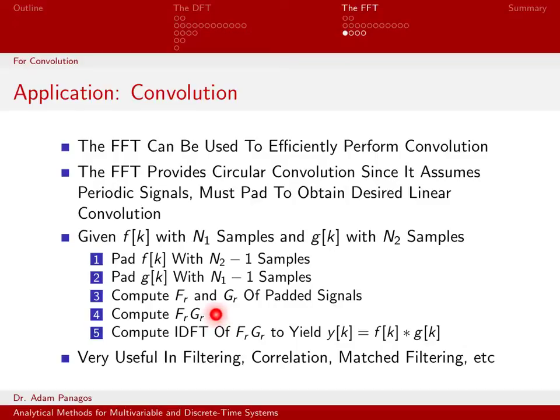We can then do an element-wise multiplication of these. We're going to take Fr times Gr. And then we can use the inverse fast Fourier transform to go from the frequency domain back to the time domain. And this will actually give us the convolution that we are looking for.